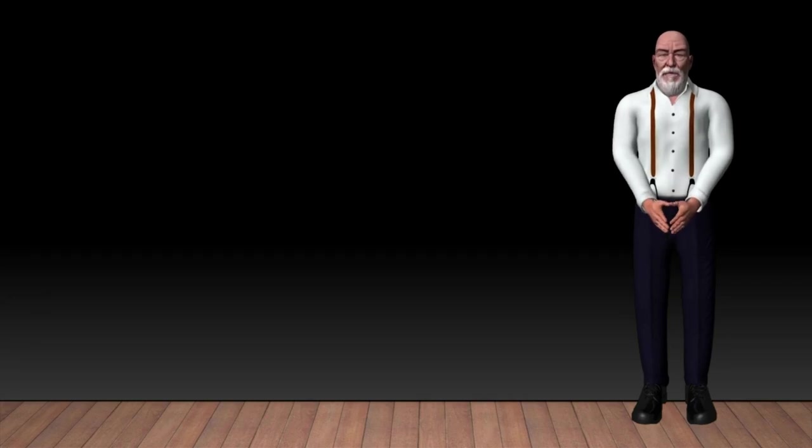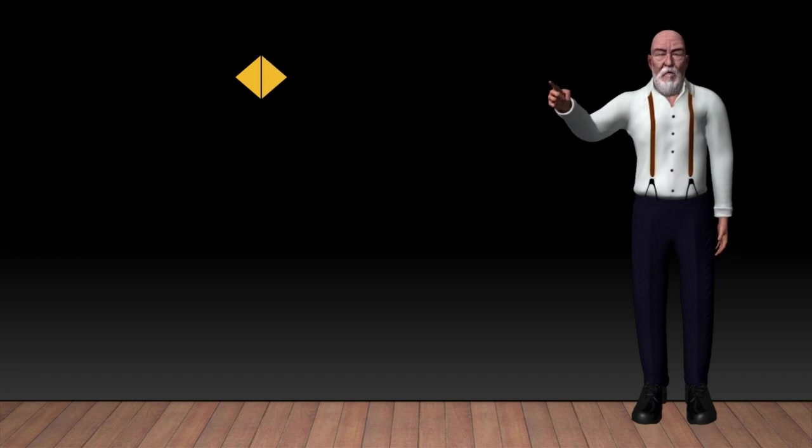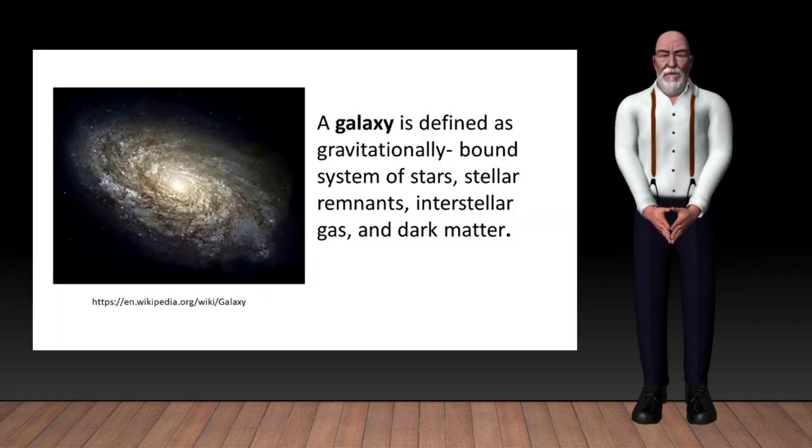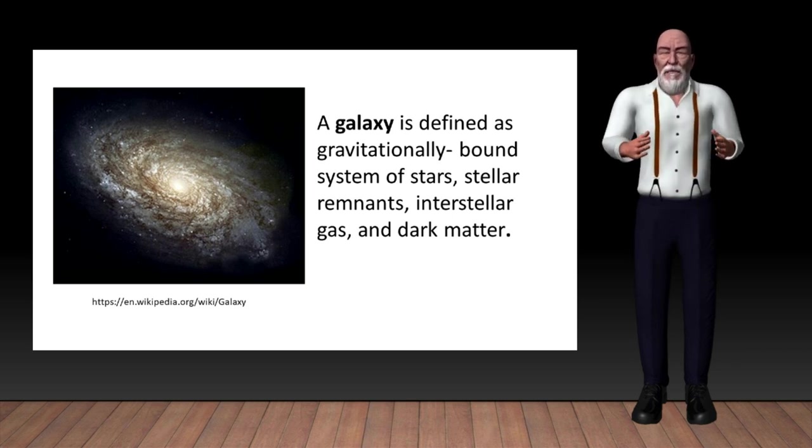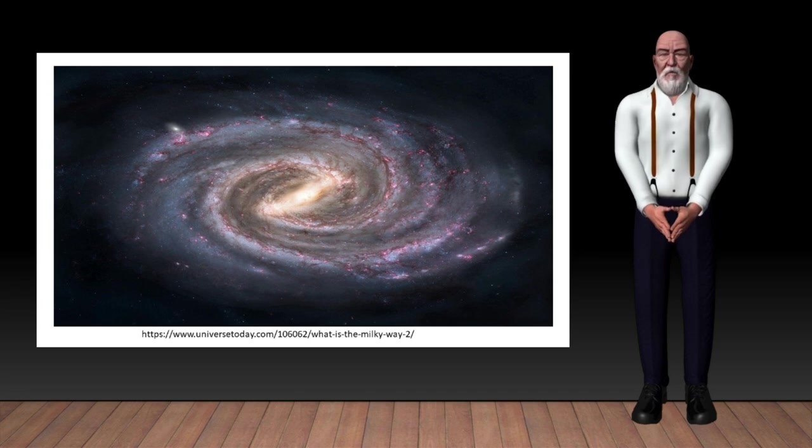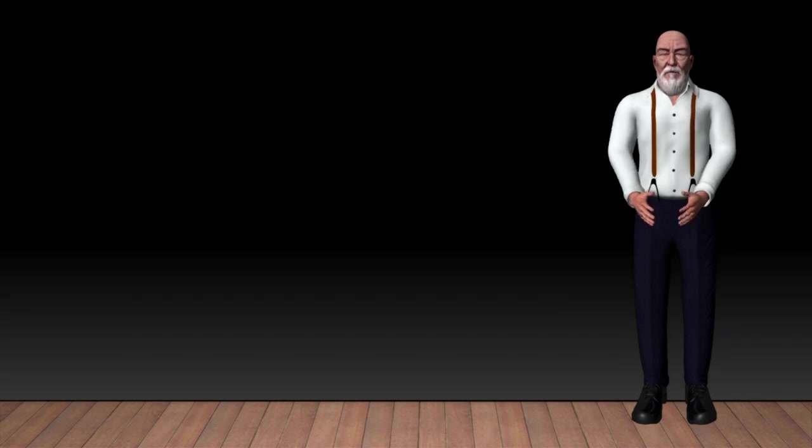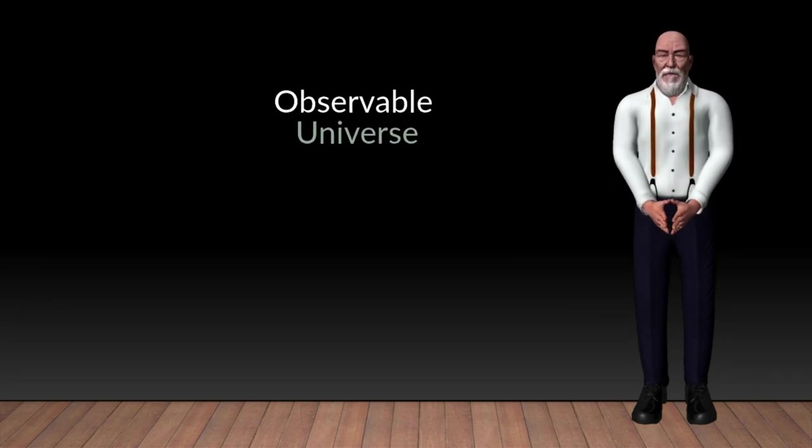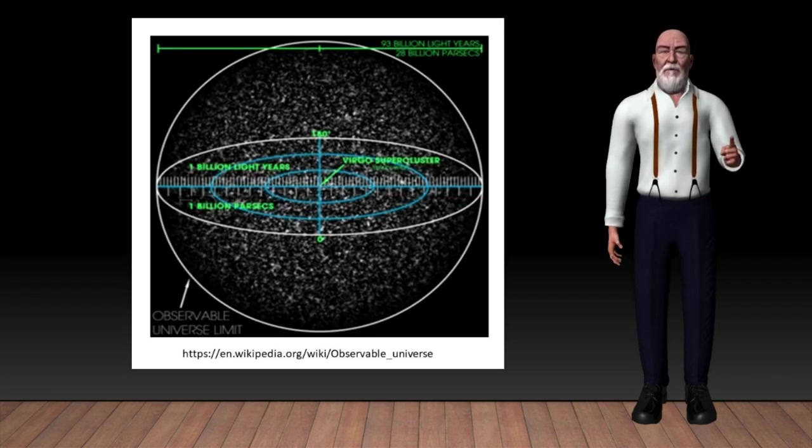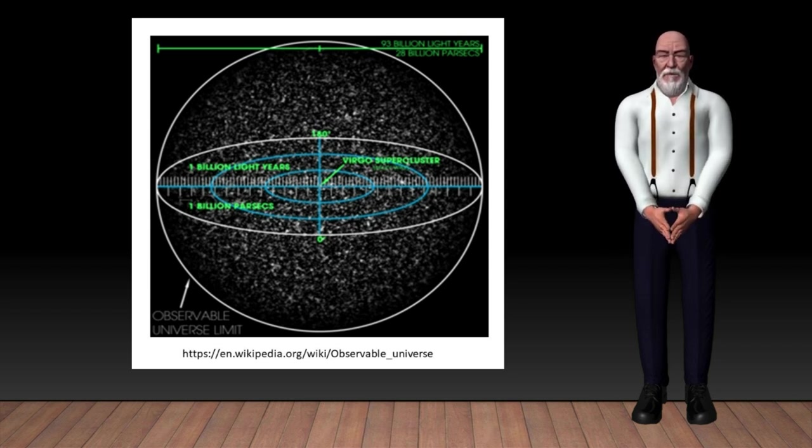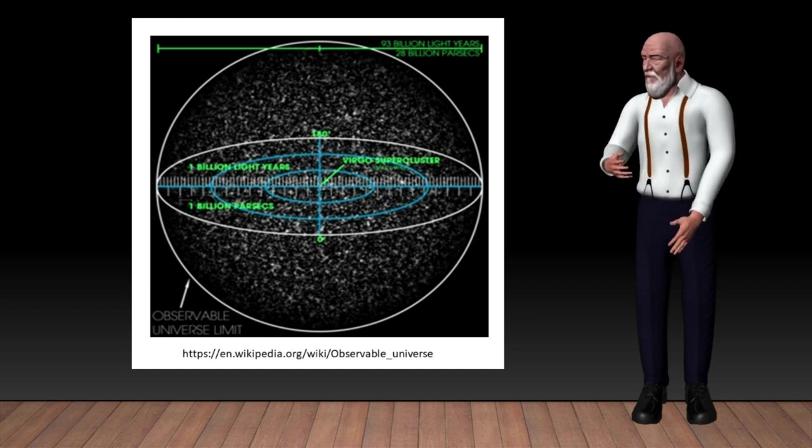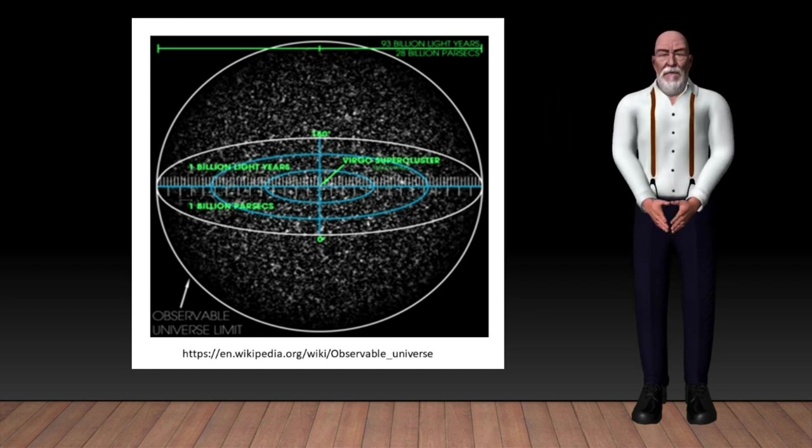In the origin of the universe, there was an era called the matter era when stars and galaxies began to form. A galaxy is defined as a gravitationally bound system of stars, stellar remnants, interstellar gas, and dark matter. The Milky Way is one of the billion galaxies in the observable universe. The observable universe is a spherical region comprising all matter that can be observed from Earth or its space-based telescopes at the present time.